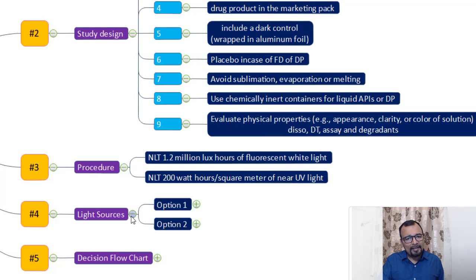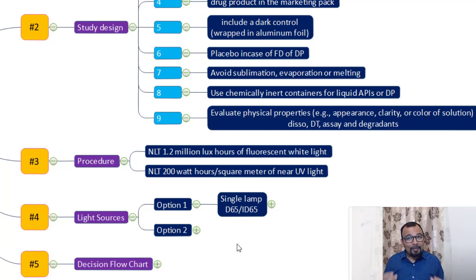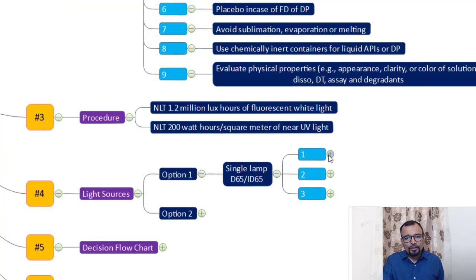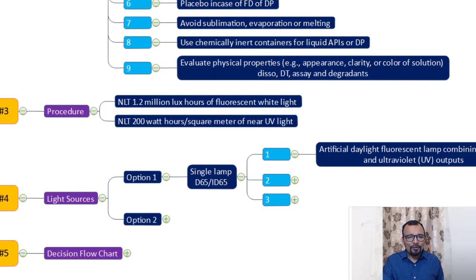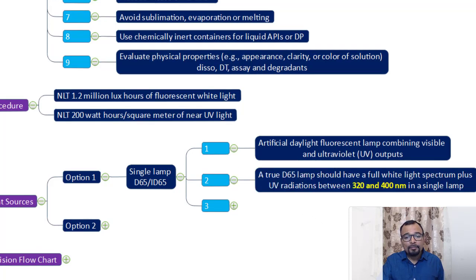There are two different light source options specified in this guideline. Option one is the use of a single lamp — D65 or ID65 — which is daylight or indoor light. Our sunlight hitting the earth's surface also contains certain amounts of UV radiation, so this single lamp must provide both white fluorescent light and near UV light. An artificial daylight fluorescent lamp combining visible and ultraviolet outputs is required.